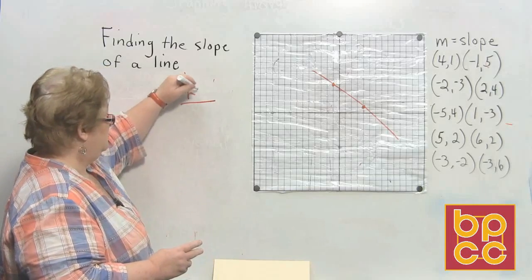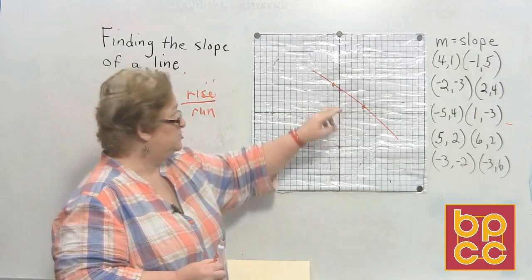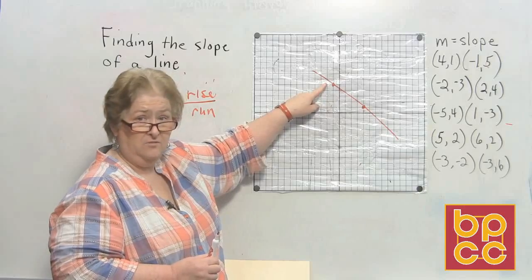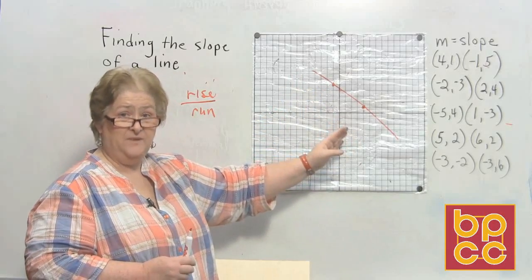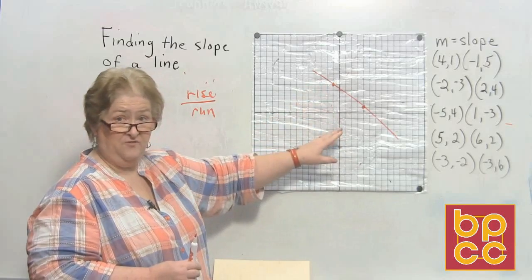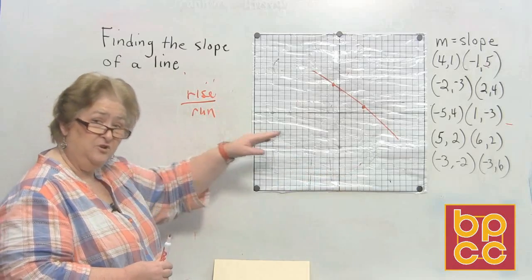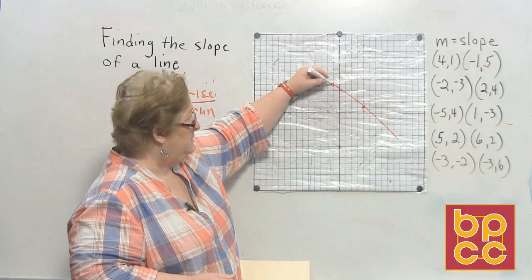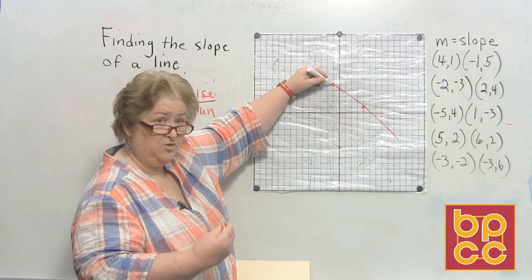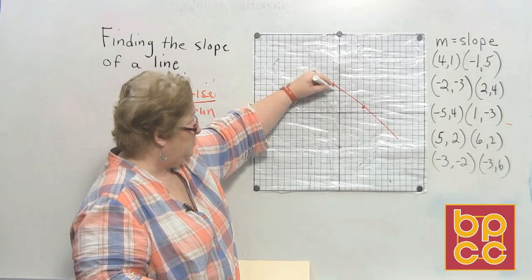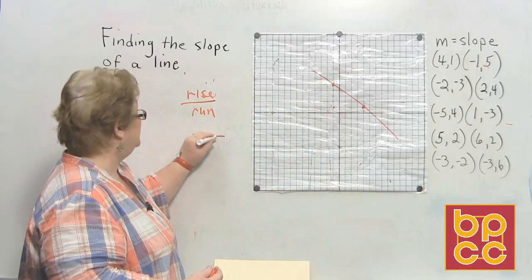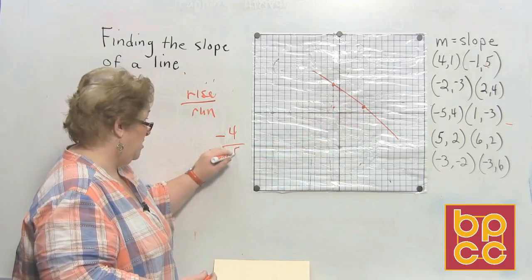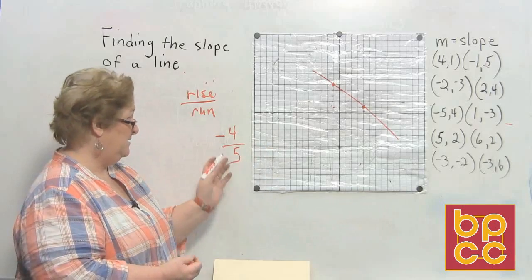Remember that we have rise over run. I want to start at this point and travel down until I get in line with the other point. We know this line is going downhill, so one of the numbers has to be negative. We do north and south first, because the first number we do is always the one we put on top — if you do left and right first, your slope will be upside down and incorrect. Going down four — that's a negative four on the rise — then to the right five. The slope on this line is negative four over five.